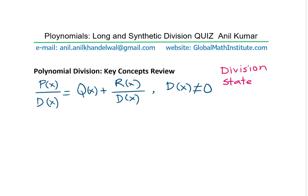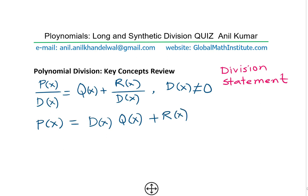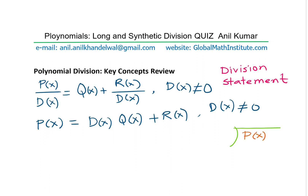It could also be written in a different way, like a multiplication. We could write the same statement as P of X equals D of X times Q of X plus the remainder R of X. Even when you write it like this, you should remember that the divisor D of X cannot be equal to 0. Basically we translated the above statement into this multiplication form. Division can also be performed as long division, where the polynomial goes inside and the divisor divides to give a quotient on the top.